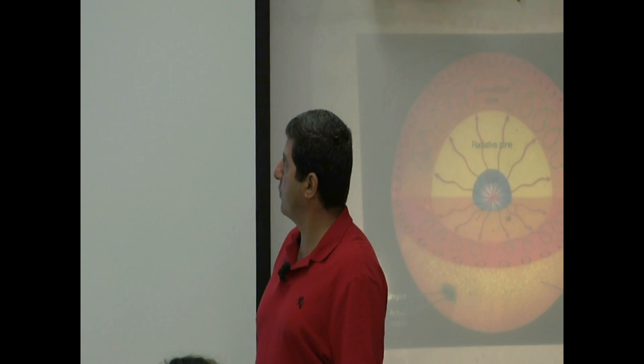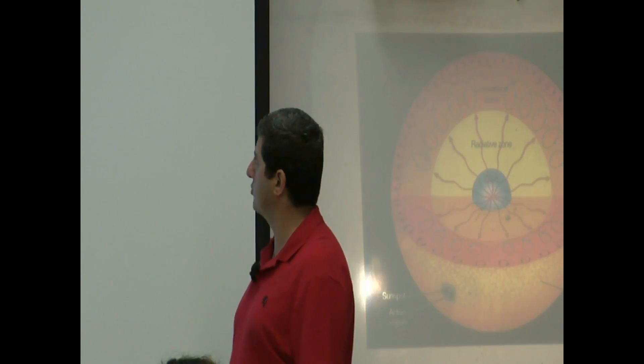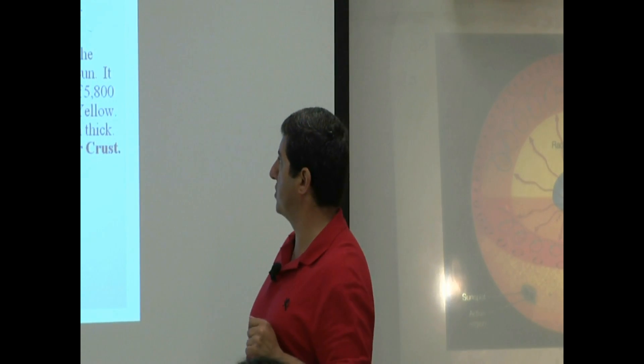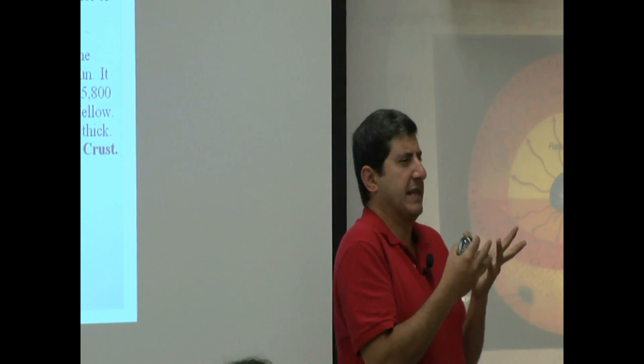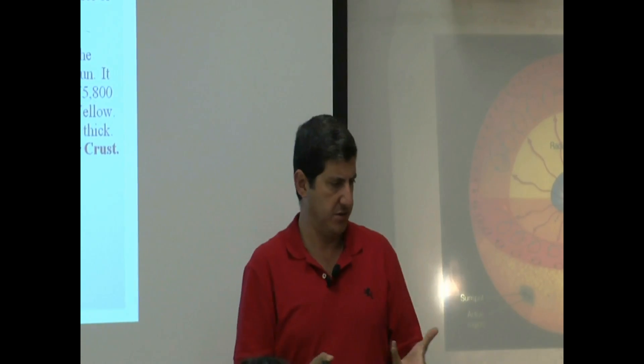Layers 1 to 3 form the interior, and together become 696,000 kilometers. Then you have layer 4, which is the photosphere. So that would be, photosphere would be analogous to the Earth's crust.